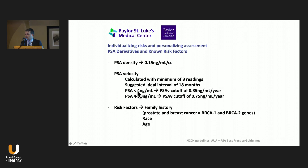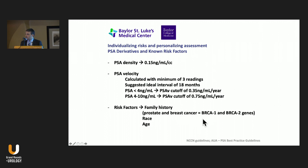If you have a PSA less than 4, the velocity cutoff is usually 0.35. For PSAs between 4 and 10, the cutoff goes to 0.75. And of course, we assess the risk factors. The most well-known risk factors are age, family history, and race. In terms of family history, the importance of prostate and breast cancer in the family, and the association with the BRCA1 and BRCA2 genes.